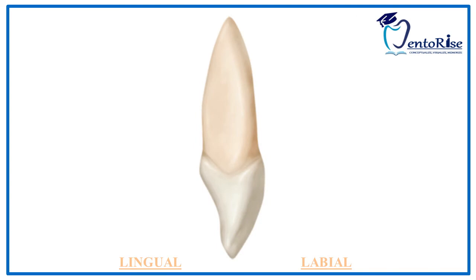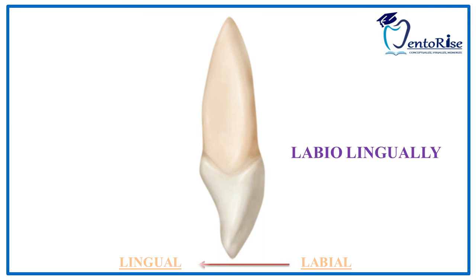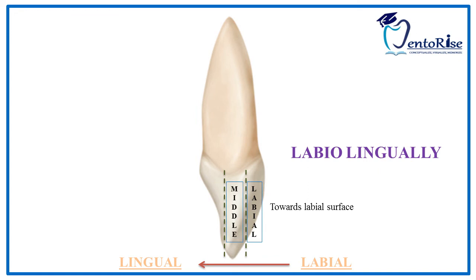Now let's look at our second approach, that is the labiolingual approach. Labiolingually implies: first, 'labio' means labial surface, and labial surface is used in context with incisors and canines only. Second, you have to start from the labial surface and then divide the crown as you move lingually. So, as shown in the figure, divide the surface of the tooth into three equal parts. The one third near to the labial surface is called the labial third, the one third in the middle is called the middle third, and the one third towards the lingual surface is called the lingual third.